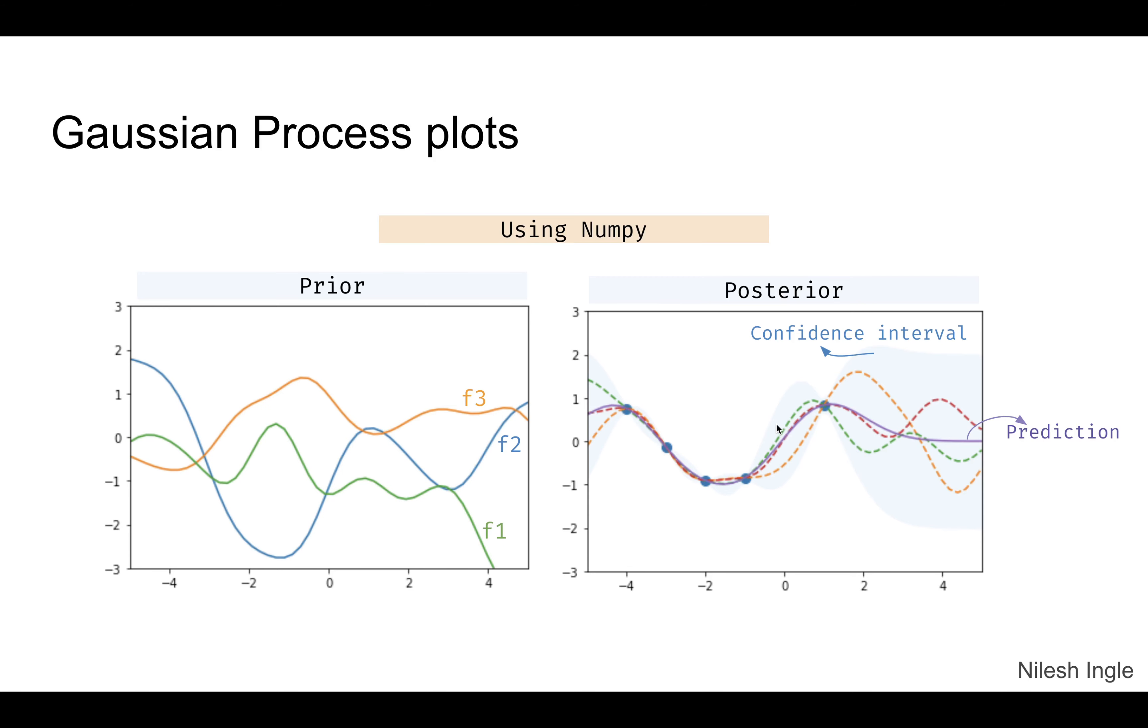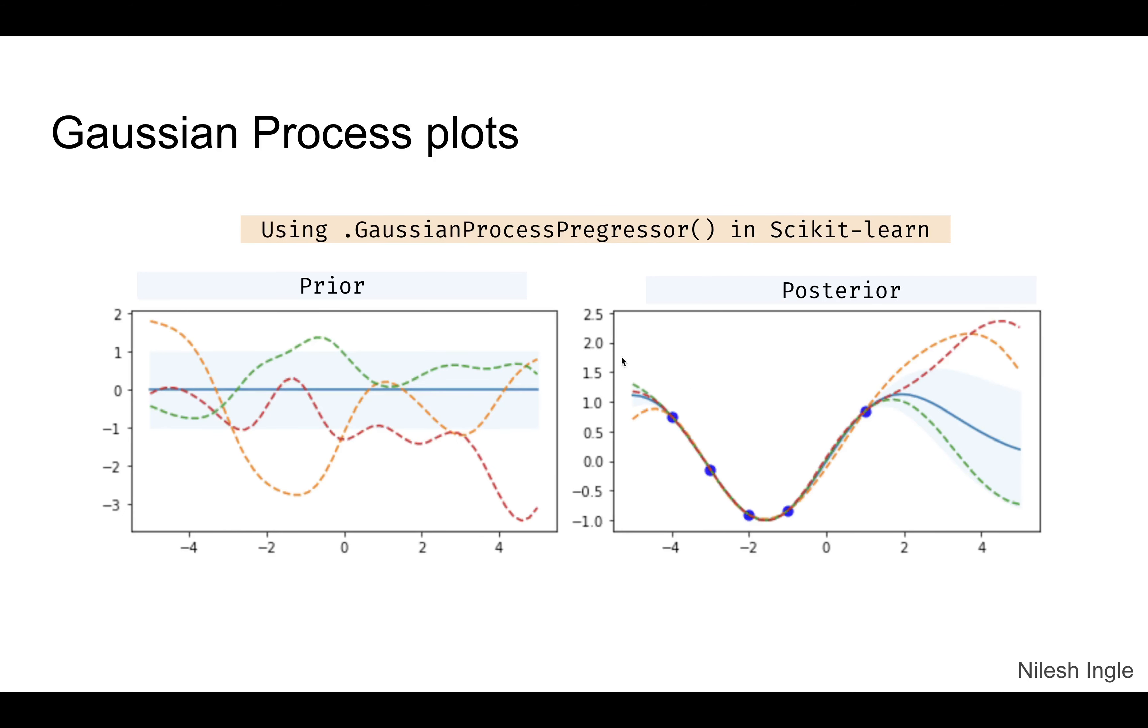Here we get a different plot, but the main idea is that we still see the same concept—that wherever there are these data points, the confidence interval is much narrower. And as soon as we go in regions where those data points are not there, we see more uncertainty in the functions.